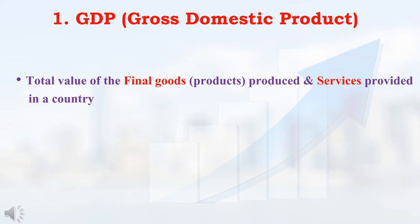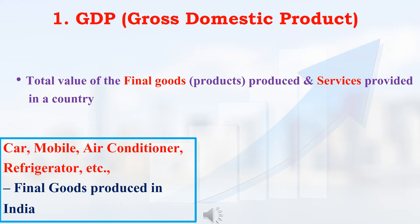For example, how Indian GDP is calculated: in India, how much total final product is produced — that product's total value — plus in India, how much total services are provided — that service's total value. Both these values will be considered for calculating the Indian GDP. Final goods produced means what products are produced in India — for example, automobiles, mobile, air conditioner, refrigerator. What goods are produced in India, all that will be considered for calculating GDP. If any product is imported from another country, that will not be added in the Indian GDP.